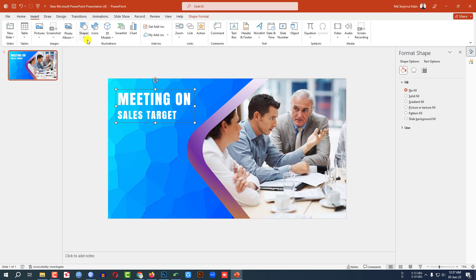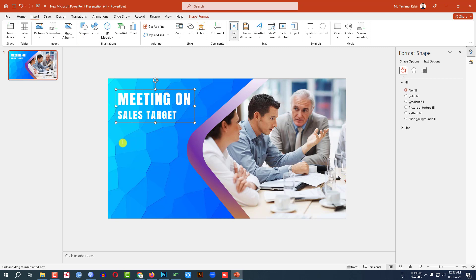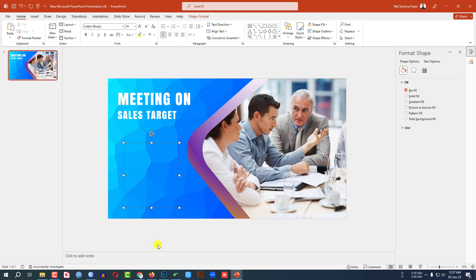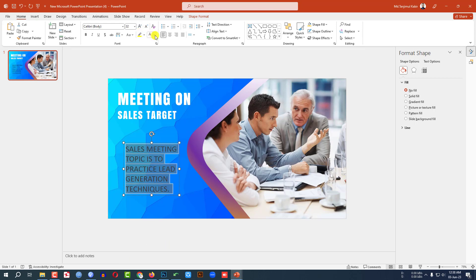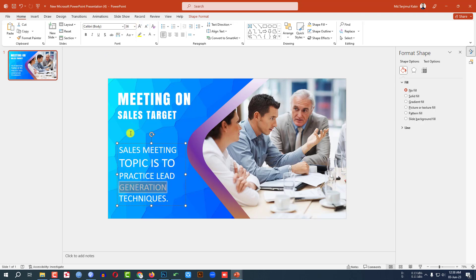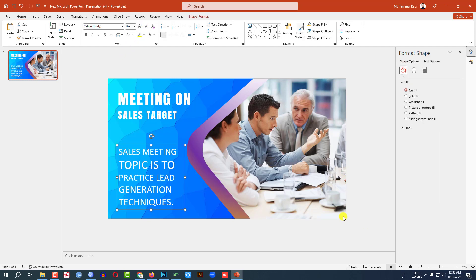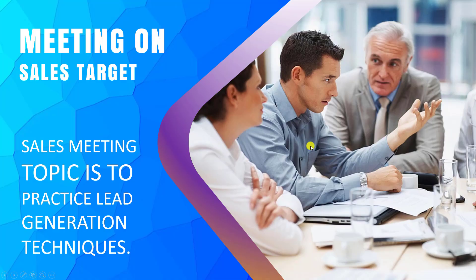Again go to Insert, go to Shape, pick a Text Box, drag it over and type additional text. Make it bigger, make it white color, and increase the size of the key words. Now this is looking perfect. If you watch the slide show, you will see this looks great.